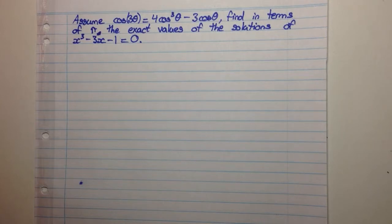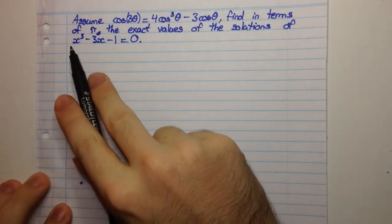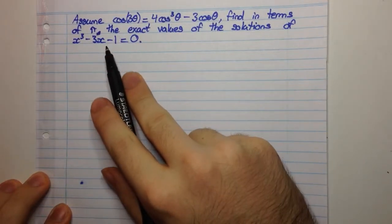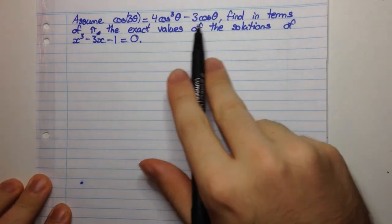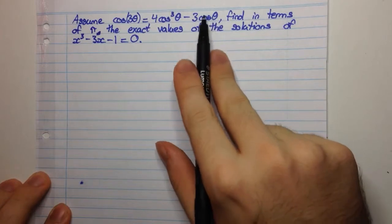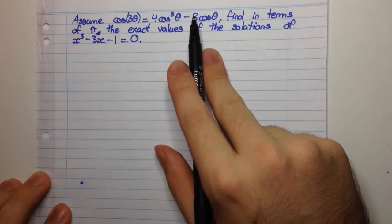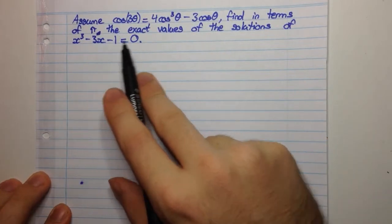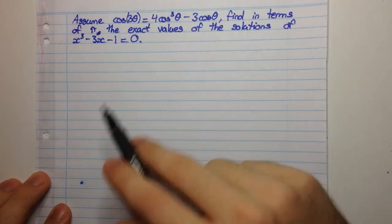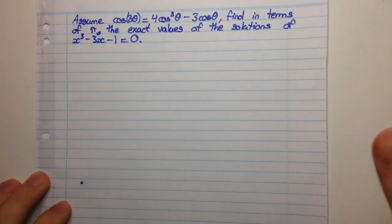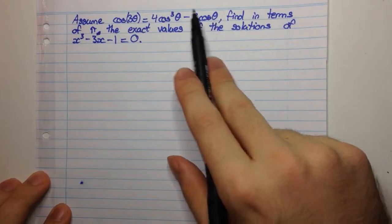So the first thing that we should look at is that we have an equation to solve and we're given this fact here. We know we're going to somehow need to use this fact when we're trying to solve this, because questions will never give you pieces of information for no reason.